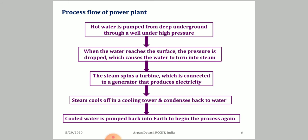In the flow diagram: first, hot water is taken outside using a pump; when the water reaches the surface, the pressure drops, turning water into steam. Steam rotates the turbine, producing electricity. The steam cools down using a cooling tower and condenses back into water. That cold water is pumped back into the Earth to begin the process again. This is the total flow diagram of geothermal energy extraction.